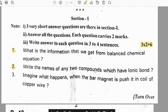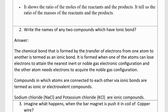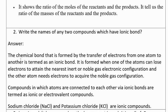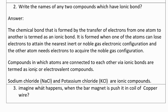Write the names of any two compounds that have ionic bond. The chemical bond that is formed by the transfer of electrons from one atom to another is termed as an ionic bond. Compounds in which the atoms are connected to each other via ionic bonds are termed as ionic or electrovalent compounds.